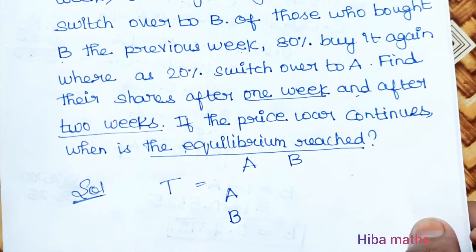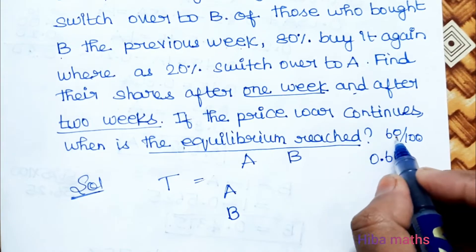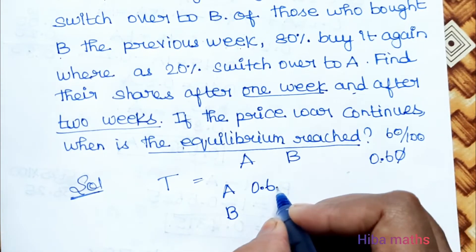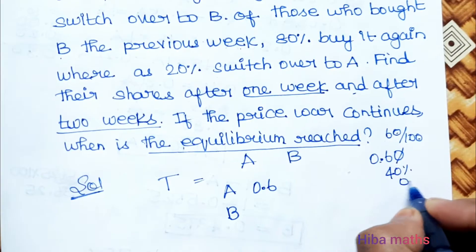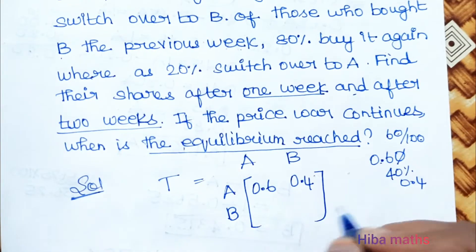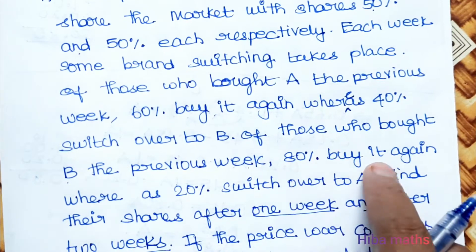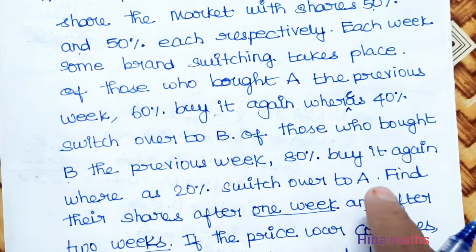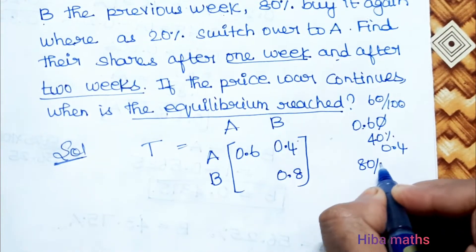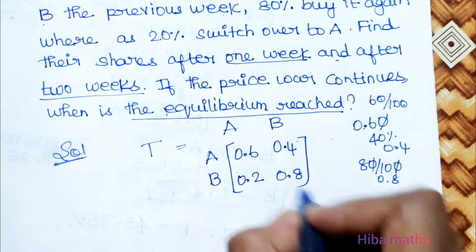60% becomes 0.60, and 40% becomes 0.4. For product B: 80% buy it again, so 0.8, and 20% switch to A, so 0.2. The transition matrix is: Row A = [0.6, 0.4], Row B = [0.2, 0.8].